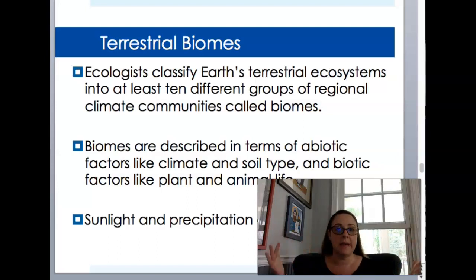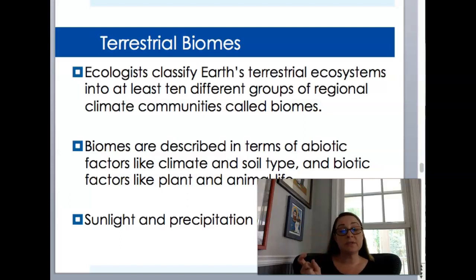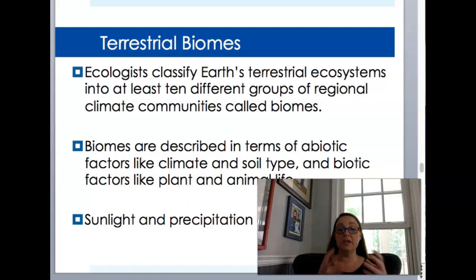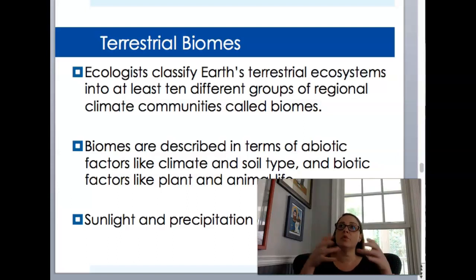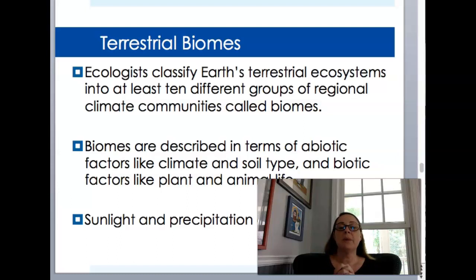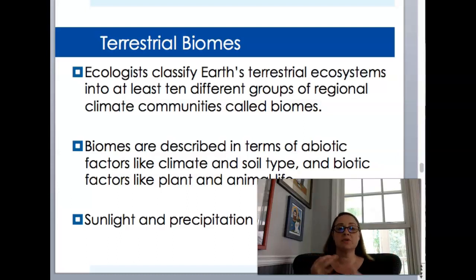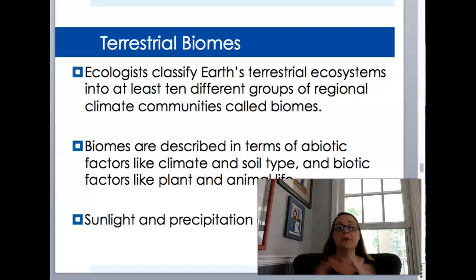Terrestrial just means land-based, as opposed to aquatic and marine, which is in the water. The Earth's terrestrial ecosystems are broken up into biomes. A biome is just a collection of ecosystems that are similar to each other. You're really looking at averages and grouping them together based on temperature, precipitation, sunlight, and things like that. Biomes are described in terms of their biotic and abiotic factors. Abiotic factors include temperature, precipitation, and climate. Biotic factors are the plants and animals that live there.